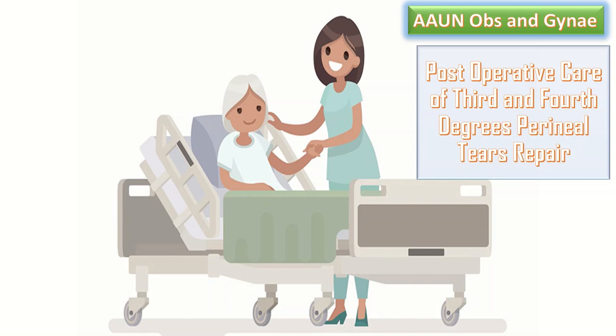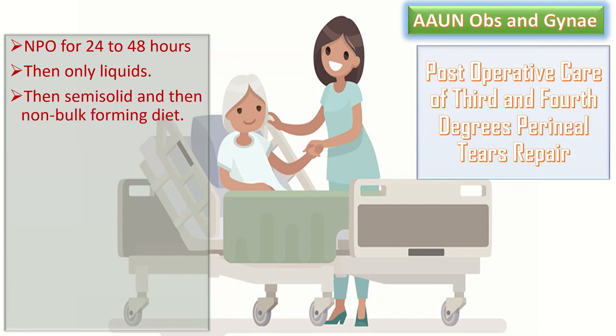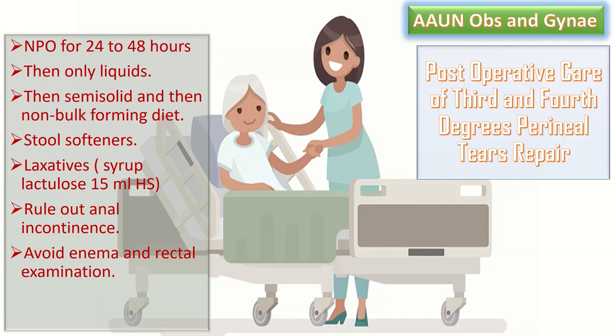For post-operative care, keep the patient NPO for 24 to 48 hours — give only IV fluids. After that, start oral intake with only liquids, then change gradually to semi-solid and then non-bulk-forming diet. Stool softeners such as docusate sodium are given for one week to minimize repair breakdown from straining during defecation. A peristaltic laxative — syrup lactulose 15 ml at bedtime — is recommended to reduce the risk of wound dehiscence.